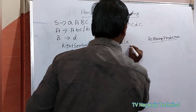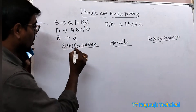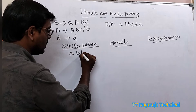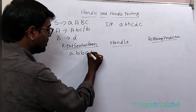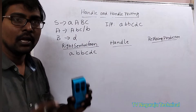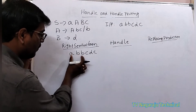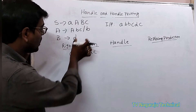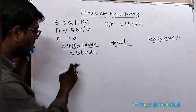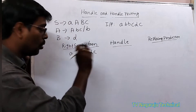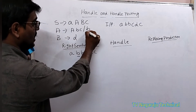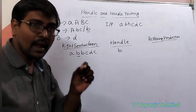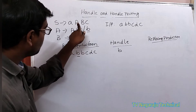Understand carefully. My input string is a b b b c d c. The simple thing is: identify a substring and check whether that substring matches on the right-hand side of a production or not. First, check 'a' — does it match? No. Now check 'b' — yes, we have a production. So 'b' is called the handle.